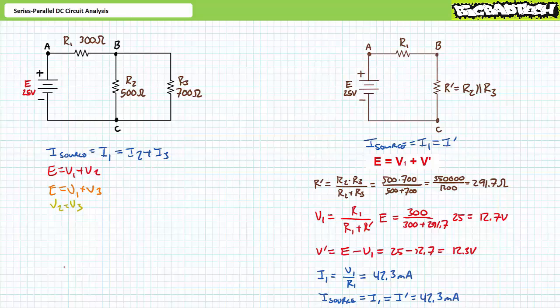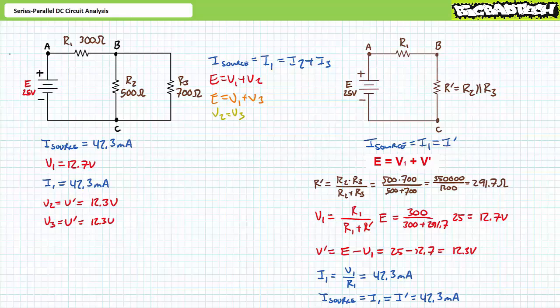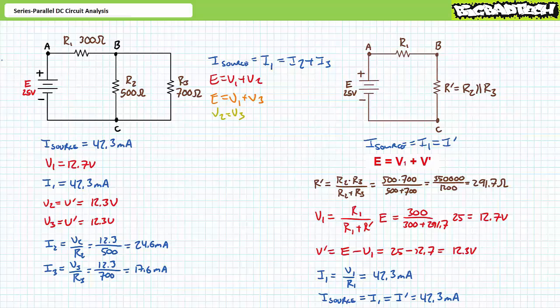Now that we've solved for the electrical properties of the series simplification, all we need to do is map these properties back to the original series-parallel circuit. We've already solved for the electrical properties of R1 and source current — source current is 42.3 milliamperes, V1 is 12.7 volts, and I1 is 42.3 milliamperes. Given simplification R single prime between nodes B and C is in fact the parallel combination of R2 and R3, it can be said that V2 and V3 are also 12.3 volts — because voltage across elements in parallel is the same. We can now use these voltage values to solve for the current through each individual element. An application of Ohm's law demonstrates that I2 equals 24.6 milliamperes and I3 equals 17.6 milliamperes. The summation of I2 and I3 equals 42.3 milliamperes — what goes in does indeed come out.